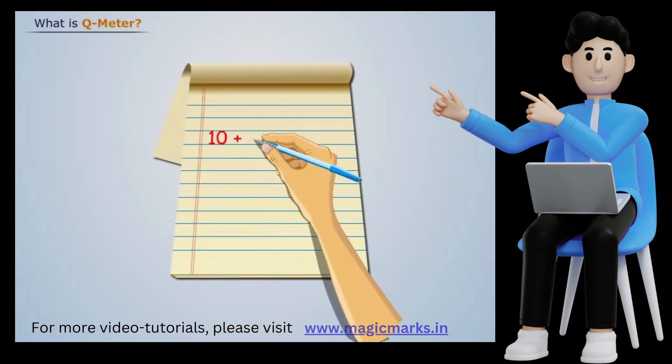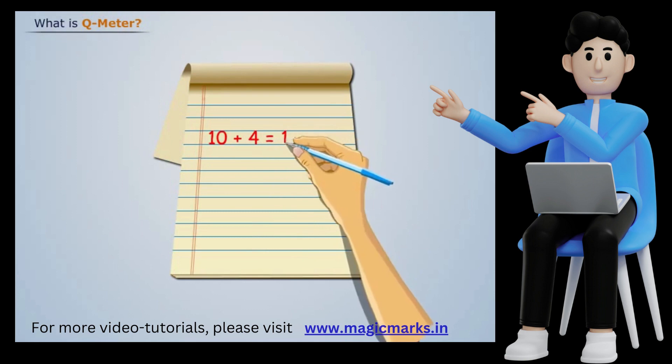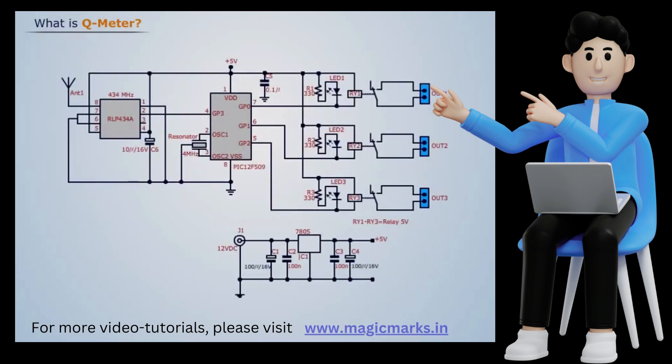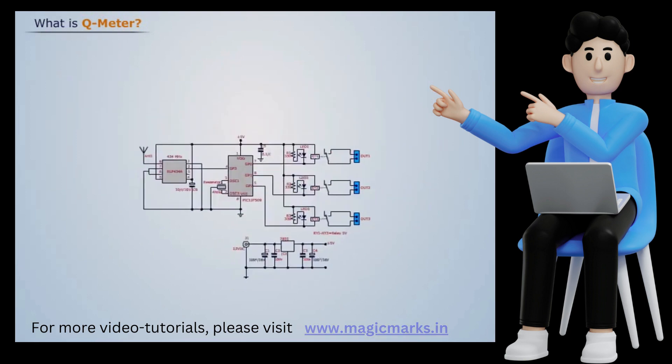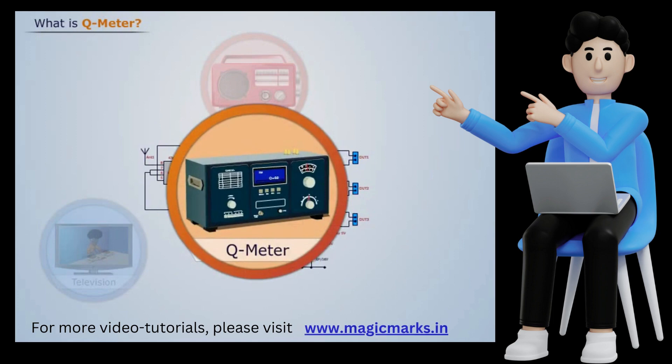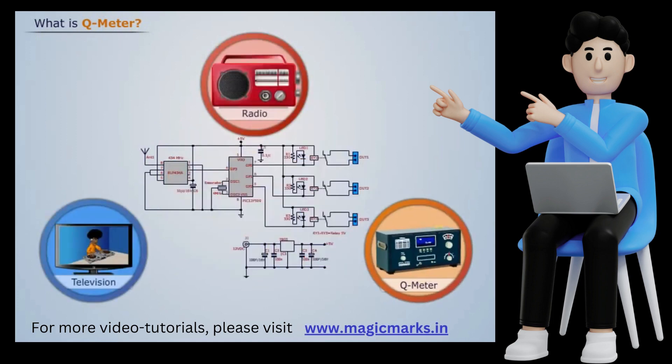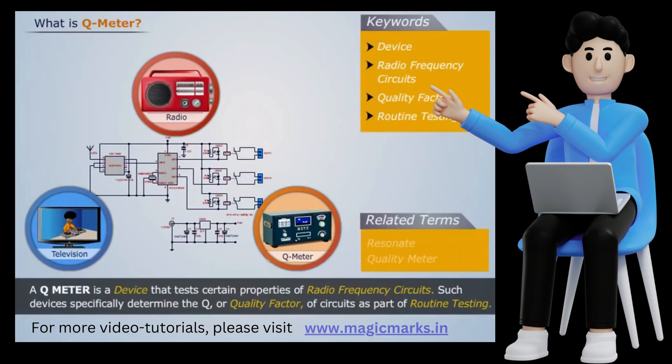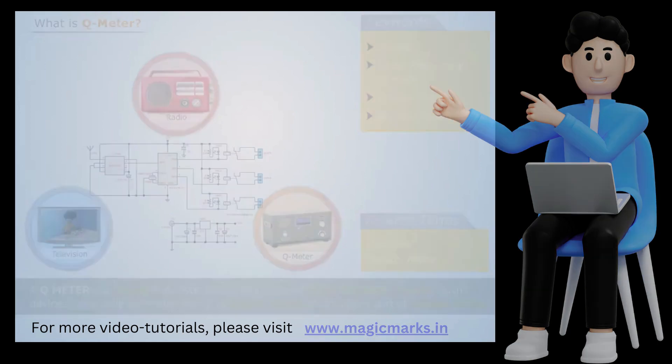The device may perform this calculation for the user or it may be necessary to manually do the math. Operators can use a Q meter with a variety of circuits on radios, televisions, and other radio frequency circuits.